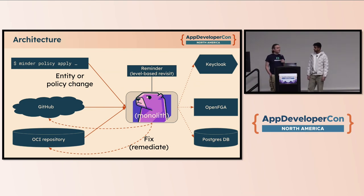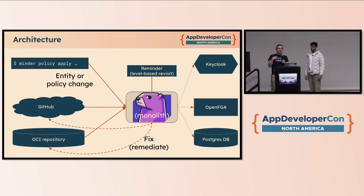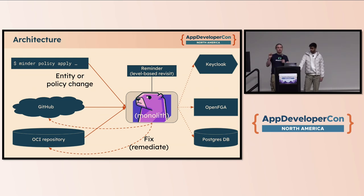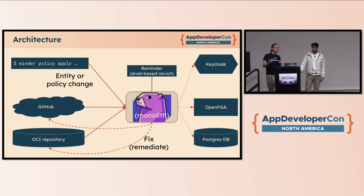Here's a quick architecture diagram of what Minder looks like. People can go and apply policies. There's a command line. If you're using the StackLock hosted instance, which is free for open source projects, there's a UI as well. You put those directions into the monolith and store them, with authorization and authentication via OpenFGA and KeyCloak. We love a whole bunch of CNCF technologies. And then as stuff happens in your OCI registries or your GitHub, we get notifications and use that to check if you're compliant with your policy.